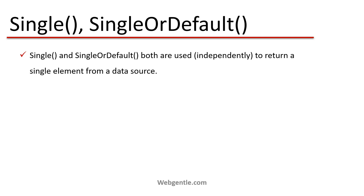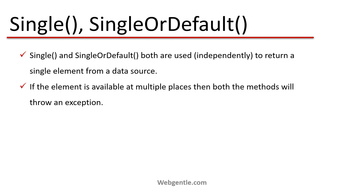Both Single and SingleOrDefault are used to return a single element from a data source. These are special methods — there should be only one match for the element in the entire data source. If more than one element matches the given condition, both methods will throw an exception. So these methods work only where exactly one match is available.